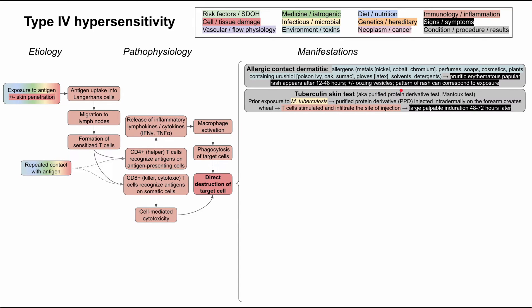The pattern of the rash can correspond to the exposure. If a patient walks through a dense forest with poison oak or poison ivy, they might have allergic contact dermatitis around their legs. If they spread the urushiol-containing oil to their arms by scratching, they'll also have dermatitis there. If they use latex gloves, the reaction is usually limited to the hands. So the pattern of the rash corresponds to exactly where the patient was exposed to the allergen.